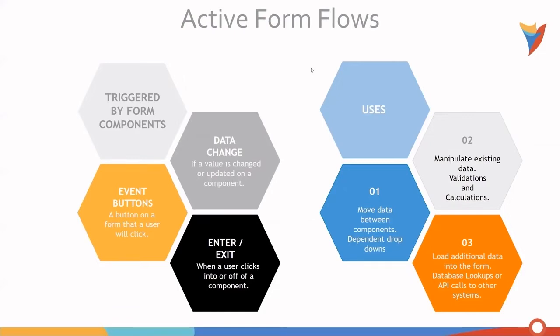Active form flows are triggered by form components. For example, data change — if a value is changed or updated on a component; button events — if a button on the form is clicked by a user; and enter/exit — when the user clicks into or off of a component.